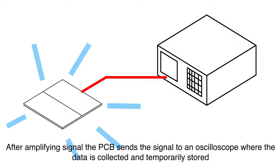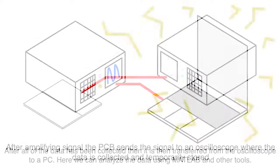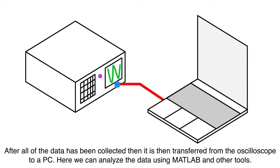The voltage is then read by the scope, which temporarily stores it. The data is then transferred from the scope to a PC. Once on a PC, we use tools like MATLAB to process the data for information including the number of photons and important features of the signals.